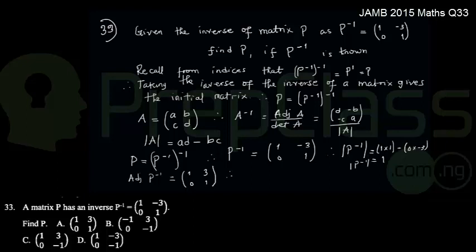So therefore, we can say that matrix P, which is the same as the inverse of P inverse, would therefore become, from the formula, the adjoint of P inverse, that would be 1, 3, 0, 1,